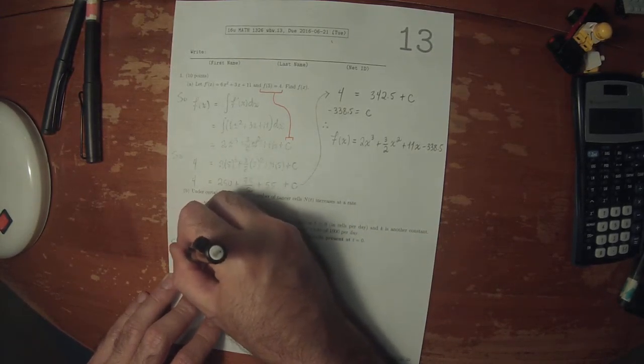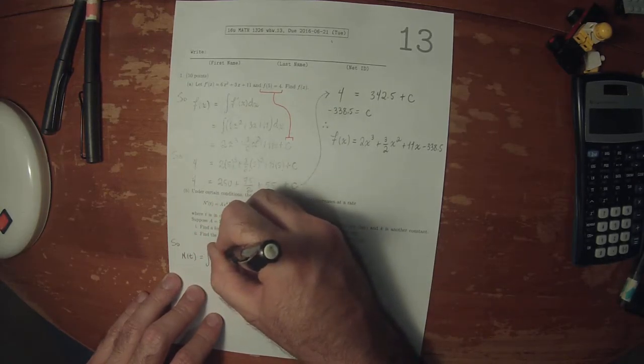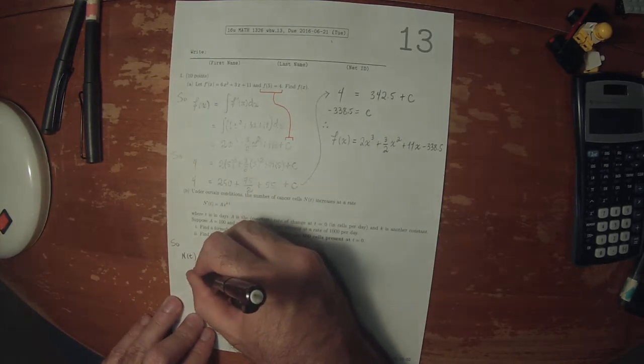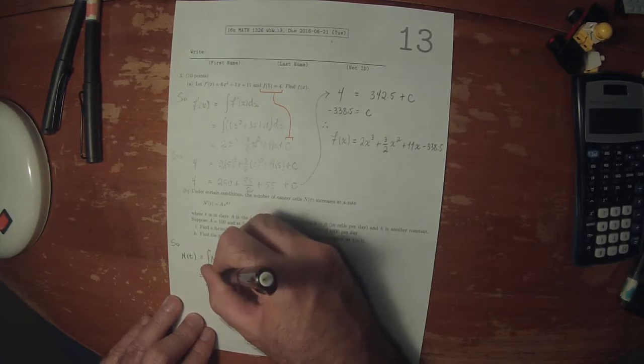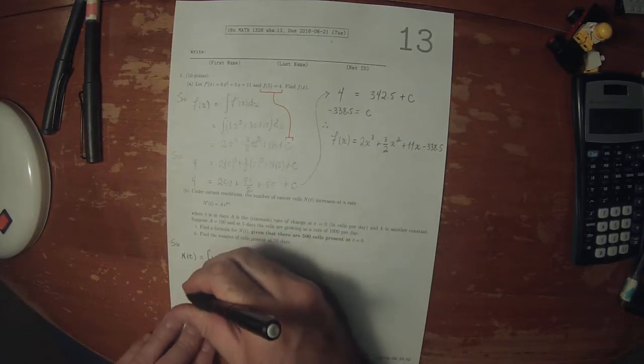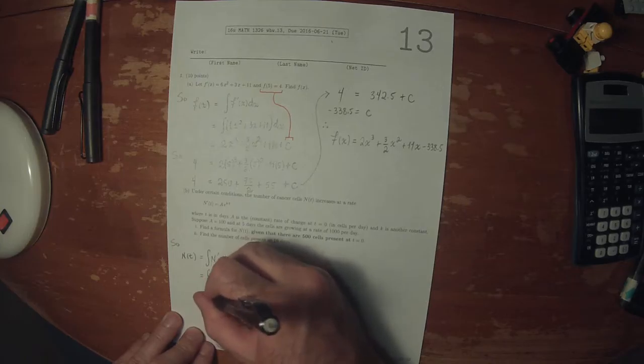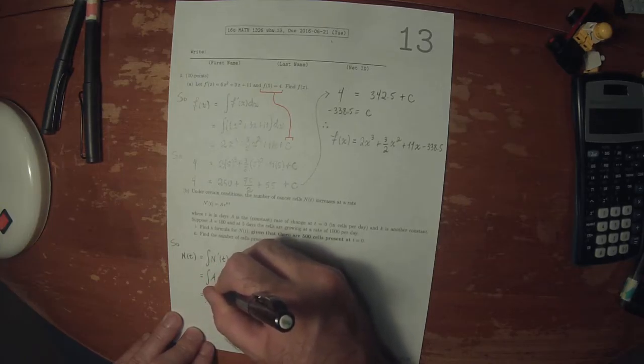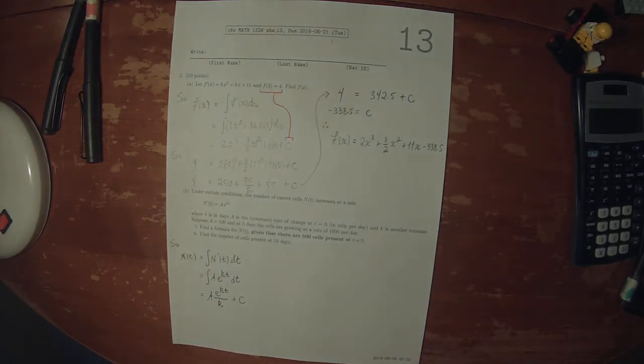So n of t is the anti-derivative of the derivative of n of t. So it should be a e to kt dt. That means that n of t is a e to kt divided by k plus a constant. And what we must do is figure out the values of a and k and c.